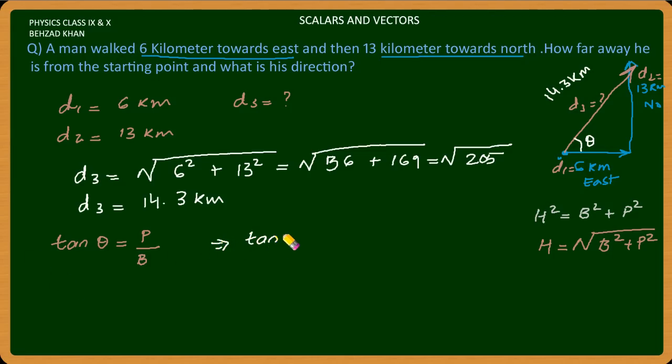Tan theta equals 13 over 6, implies theta is equal to tan inverse 13 over 6, which equals 24.77 degree east of north.